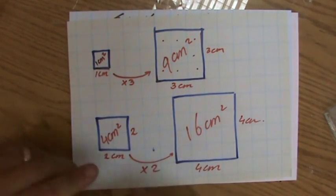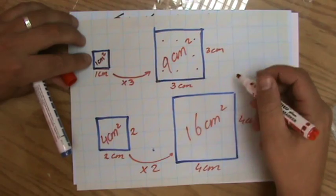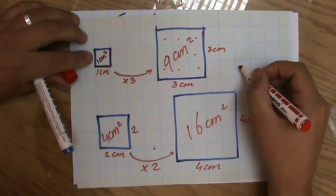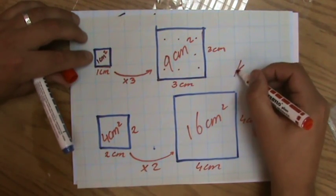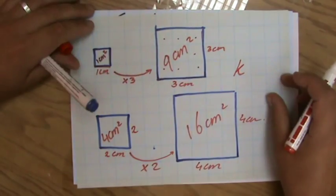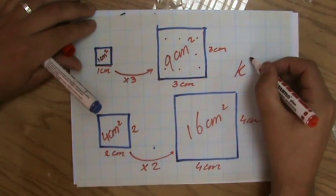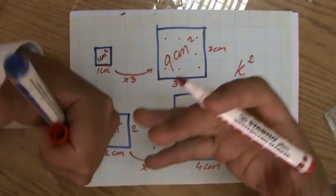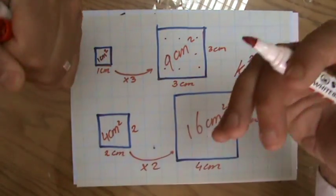Now, what do you have to do? You have to multiply the area by the scale factor, and the scale factor is usually represented by the letter k, by the scale factor to the power 2, by the scale factor squared. We're talking about the area. The scale factor squared.